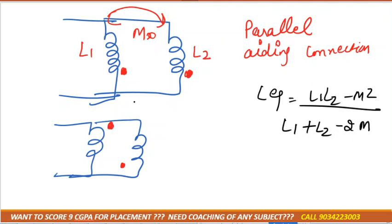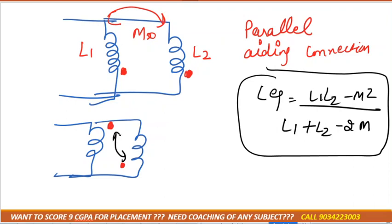So in this case also, whether it should be entering or leaving, the formula for the L equivalent is like this. But in this case, the mutual inductance between them is like this. So in this case the formula for the L equivalent is L1 L2 and then plus M square divided by...